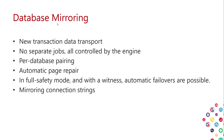Automatic page repair is an interesting feature that came with database mirroring and is also available in availability groups. If the primary accesses a data page and the checksums don't match — it's corrupted — instead of just returning an error, the primary contacts secondaries requesting that page. The secondary reads it in and, as long as it's not corrupted, sends it over the transport to the primary, which repairs that page on its own storage and simultaneously responds to the data request. It's seamless — you won't know it happened unless you read the logs.